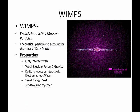One possible object or particle that could make up dark matter is something called WIMPs. WIMP is an acronym, and it stands for Weakly Interacting Massive Particles.